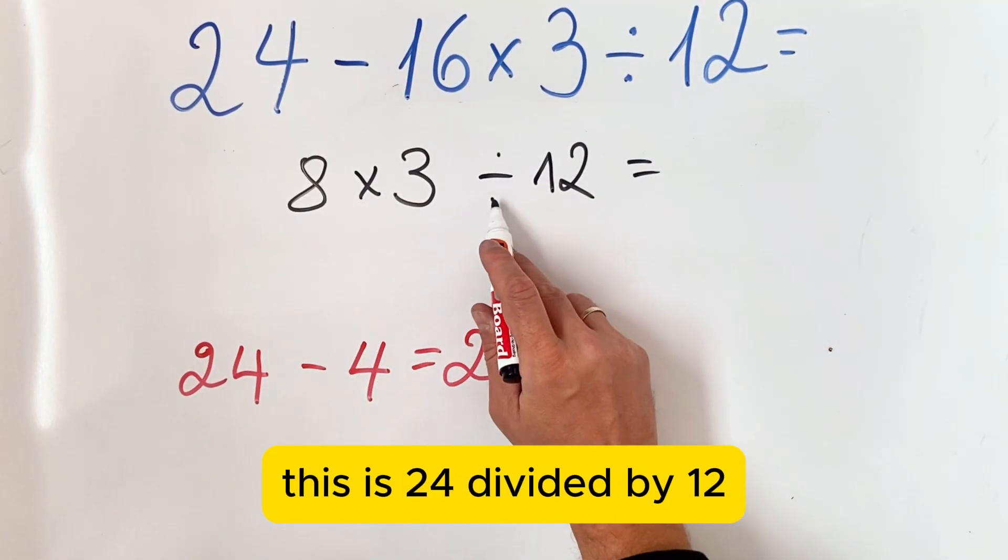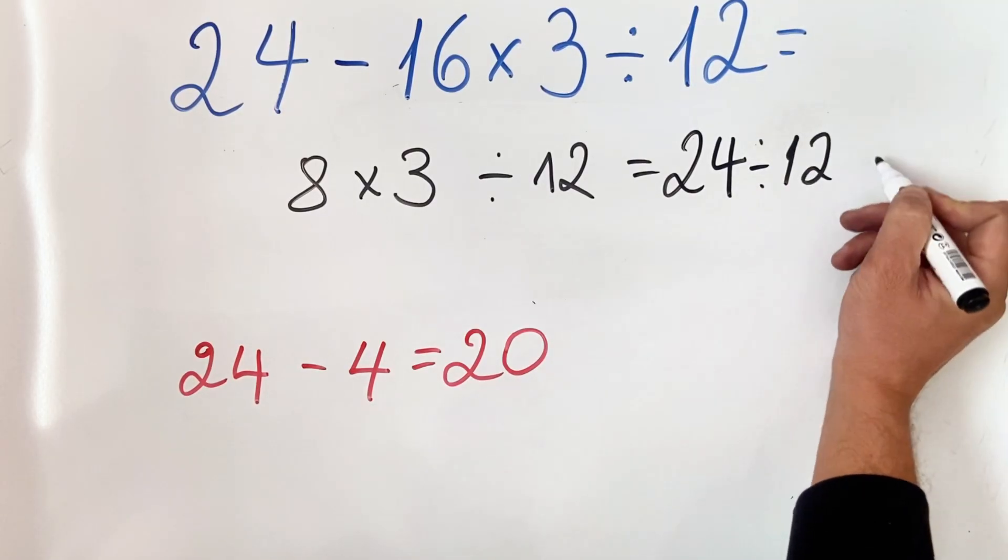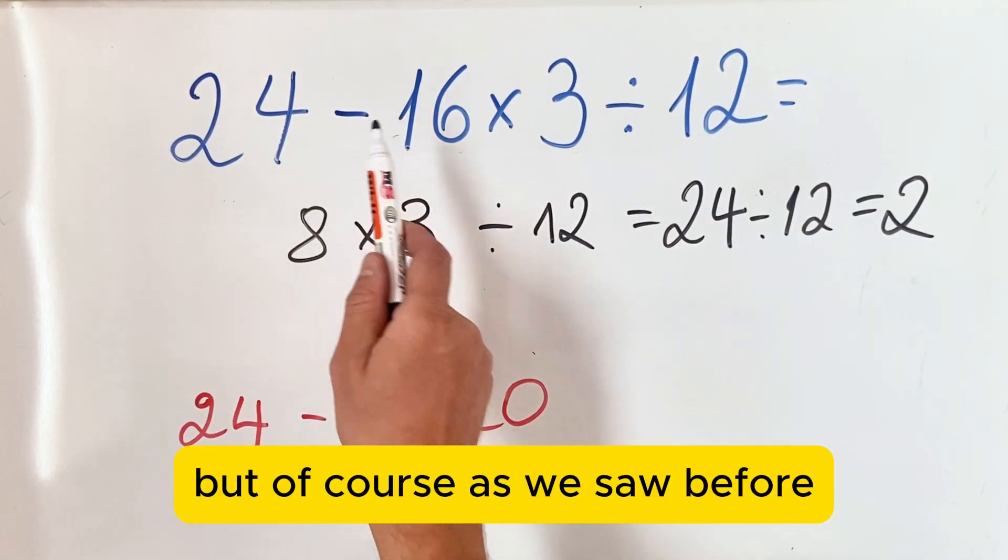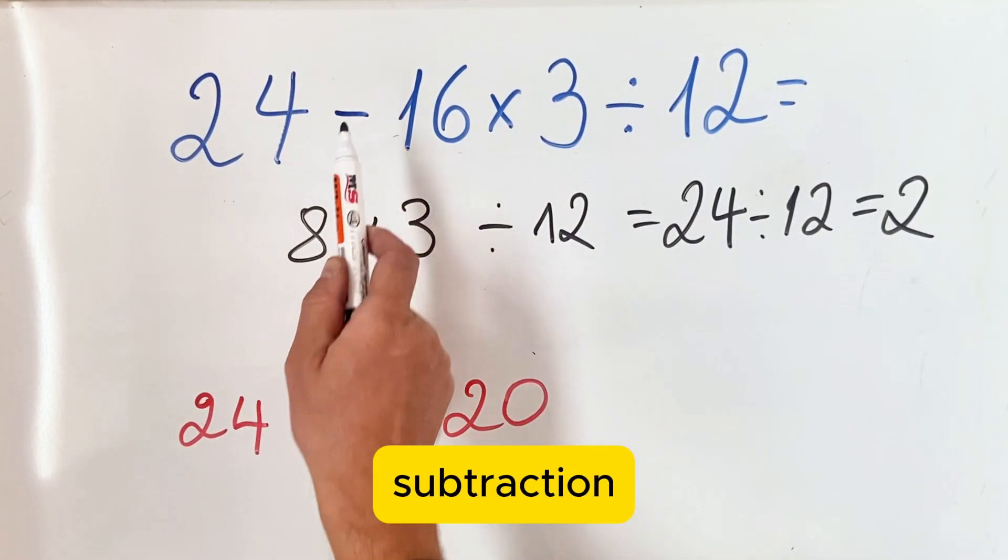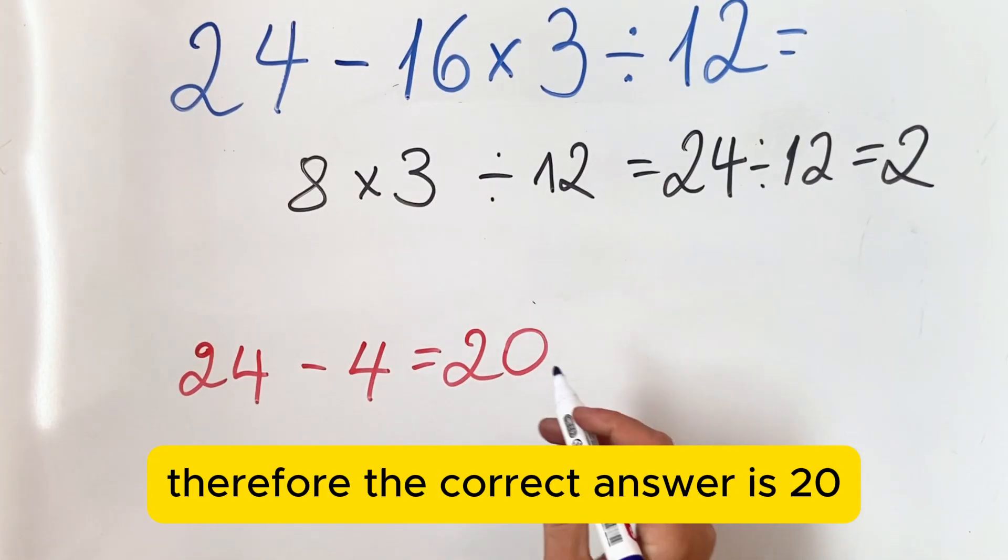And of course they get 24 divided by 12, which equals 2. But of course, as we saw before, subtraction has lower priority than multiplication and division. Therefore, the correct answer is 20.